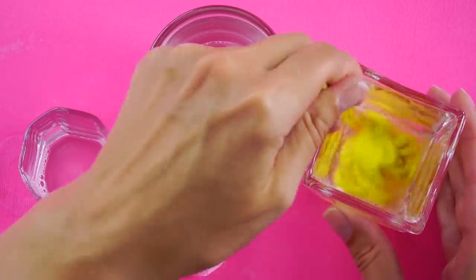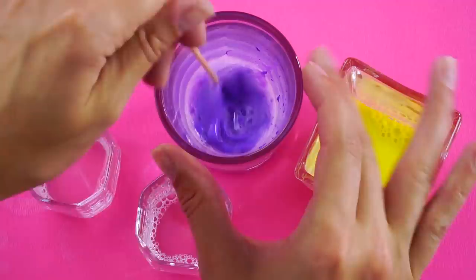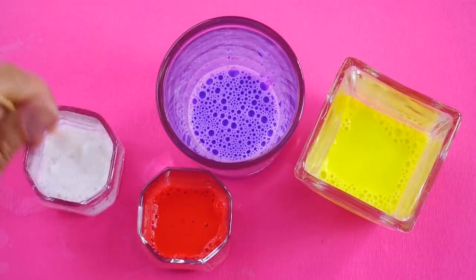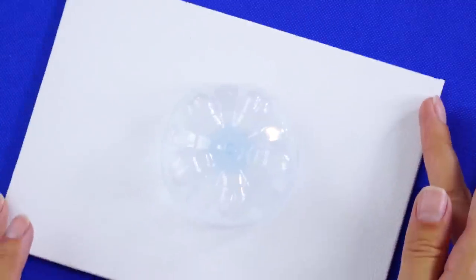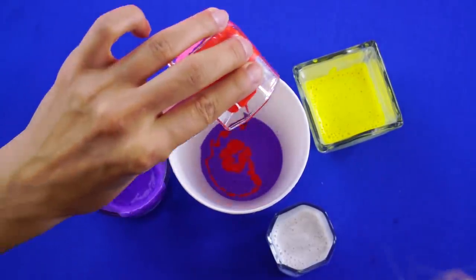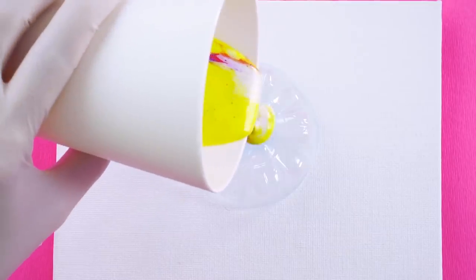Pour your acrylic paint into the container. Do a different color for each one and stir with a stick. Cut the bottom off a plastic water bottle and place it on the canvas. Now, combine the paint colors in a large container, drizzling the paint to make a cool design. Pour the paint over the bottle base.